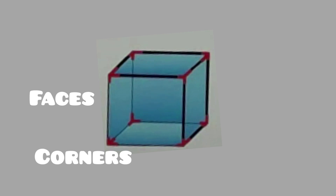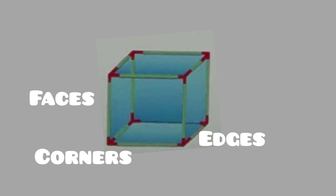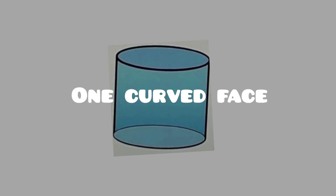Now it's time for the edges. A cube has one, two, three, four, five, six, seven, eight, nine, ten, eleven, and twelve edges. Now it's time for the cylinder. Count the faces — it has one curved face around the side.